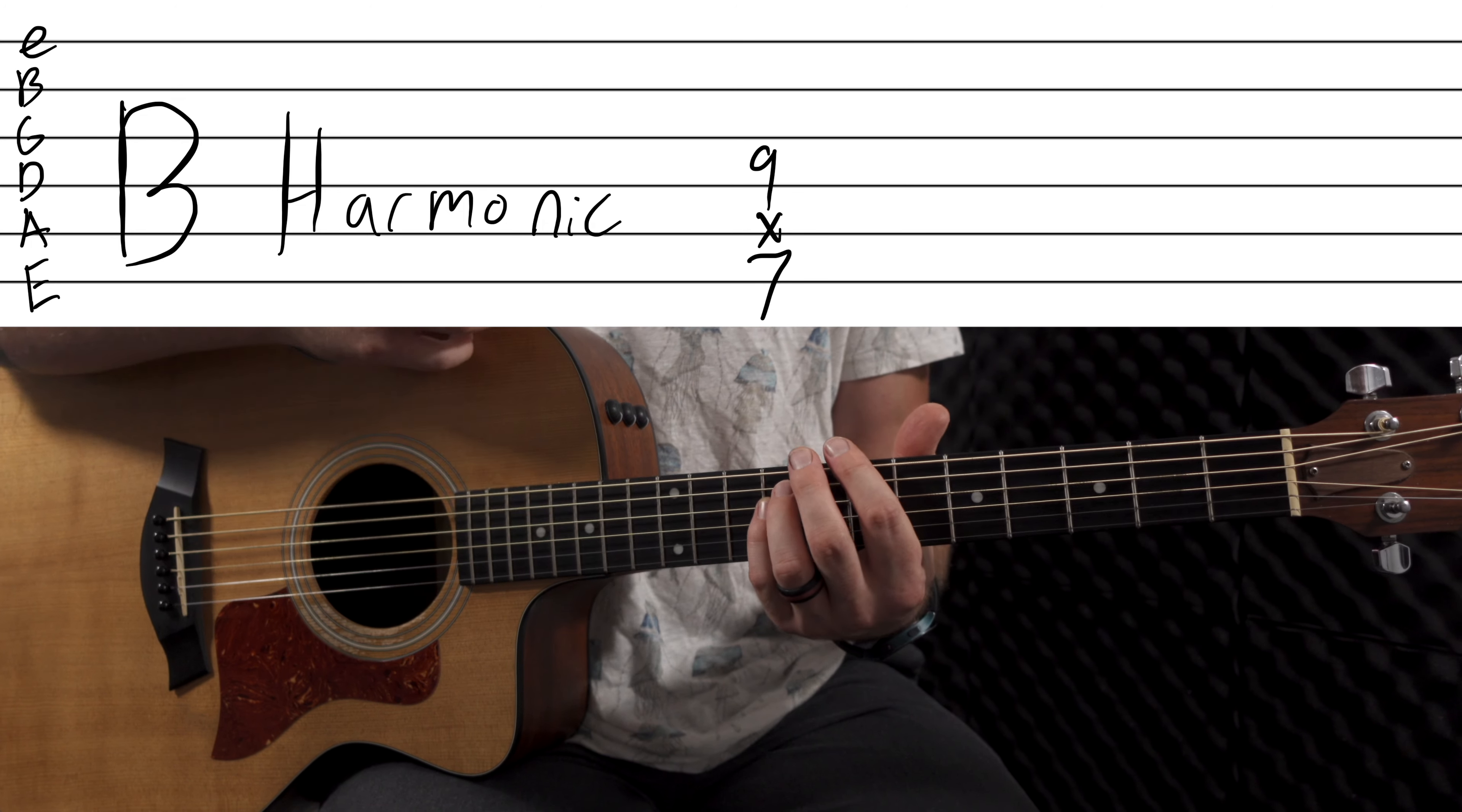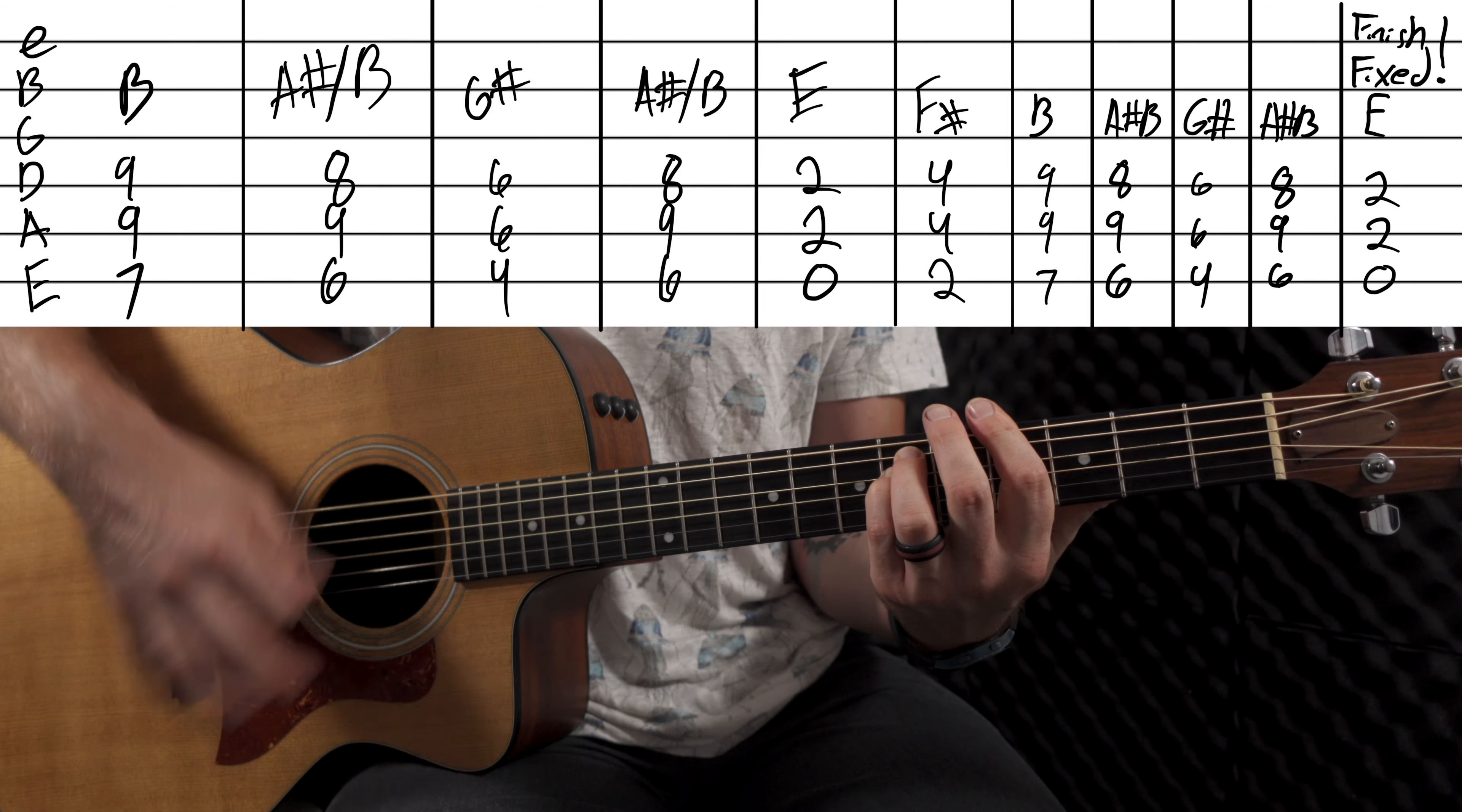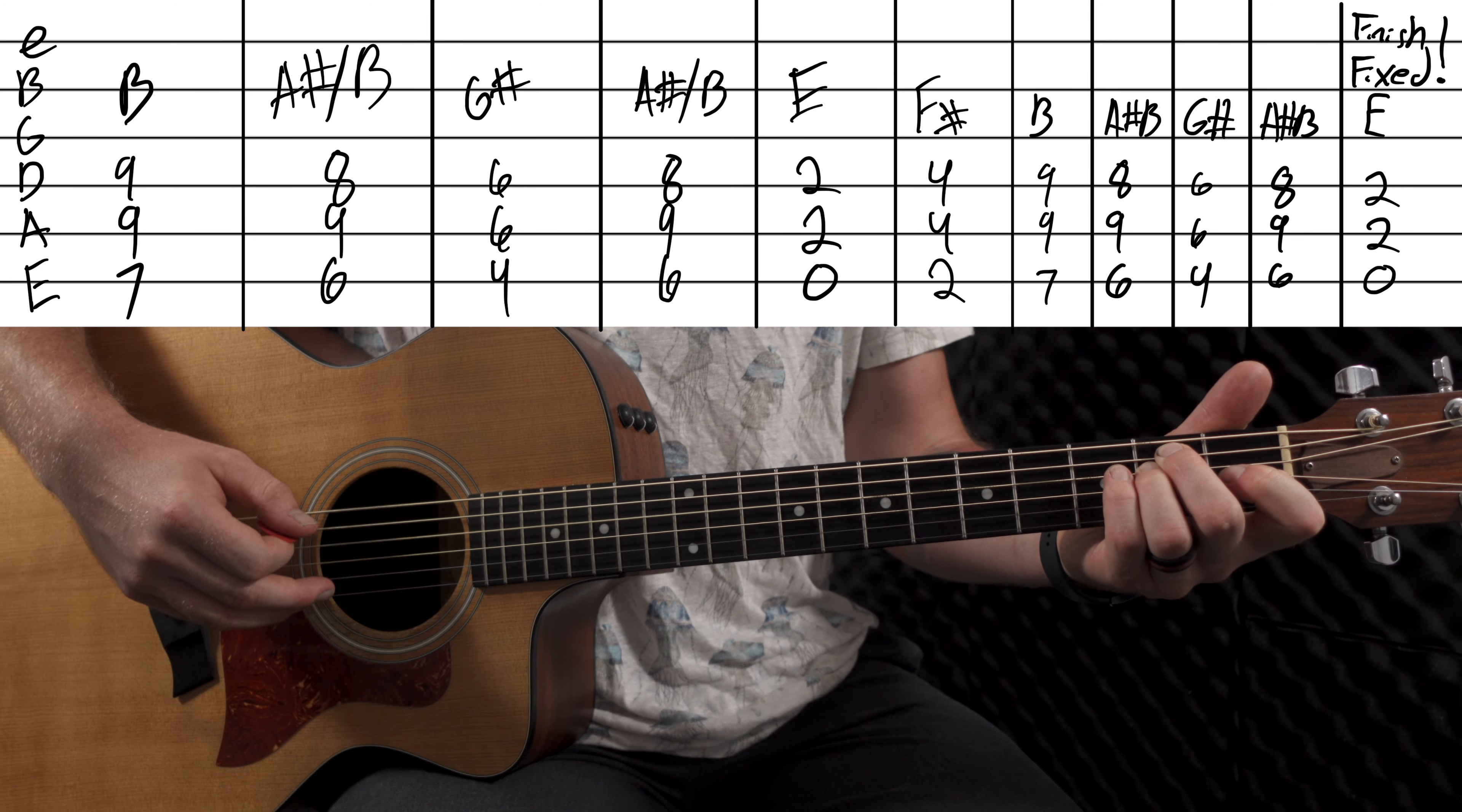Then it goes into the chorus, which is B, B minor. Then it goes to the A sharp. Then it goes to the G sharp. Then it goes back up to the A sharp. Then here's where it switches, it will go E, so 0 on the E string, 2nd fret on the A string, 2nd fret on the D string.